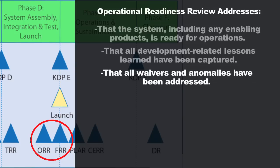You're also going to look to see that all waivers and anomalies have been addressed. During testing, some tests may not go well — a requirement couldn't be verified, or maybe a thruster didn't perform as planned. In many cases, a waiver might be considered where you say the performance will be at least 95% of what's required, and you're willing to go forward and sign a waiver. But there may be constraints on how you have to operate, and those must be documented and passed on to the operations team.